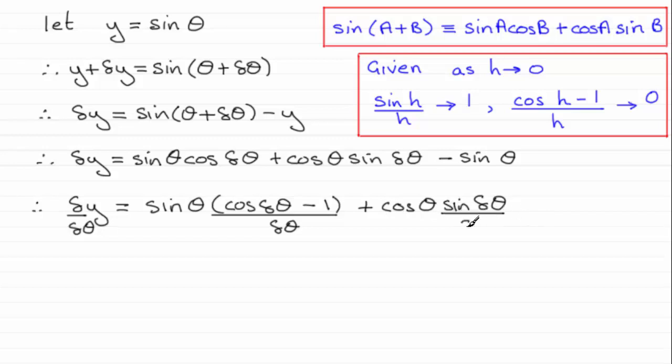Now as we let delta theta tend to 0 then what happens is that delta y over delta theta tends to a limit which we call dy by d theta.